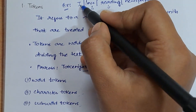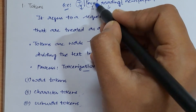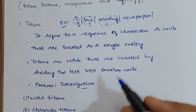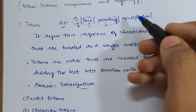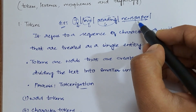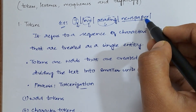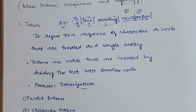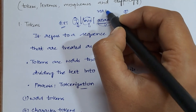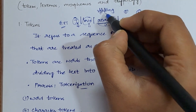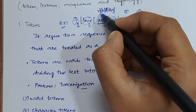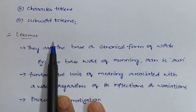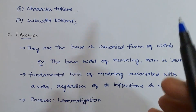Word tokens are obtained by dividing the given text into words. Subword tokens are obtained by dividing a word into smaller words — for example, 'newspaper' can be divided into 'news' and 'paper'. Character tokens are obtained by dividing a word character by character — for example, 'reading' split into individual characters. These are character tokens.